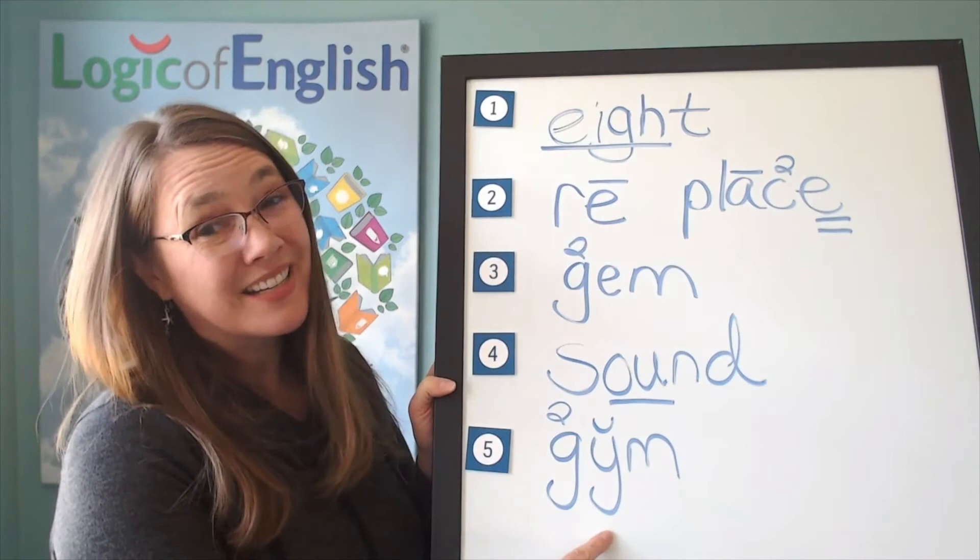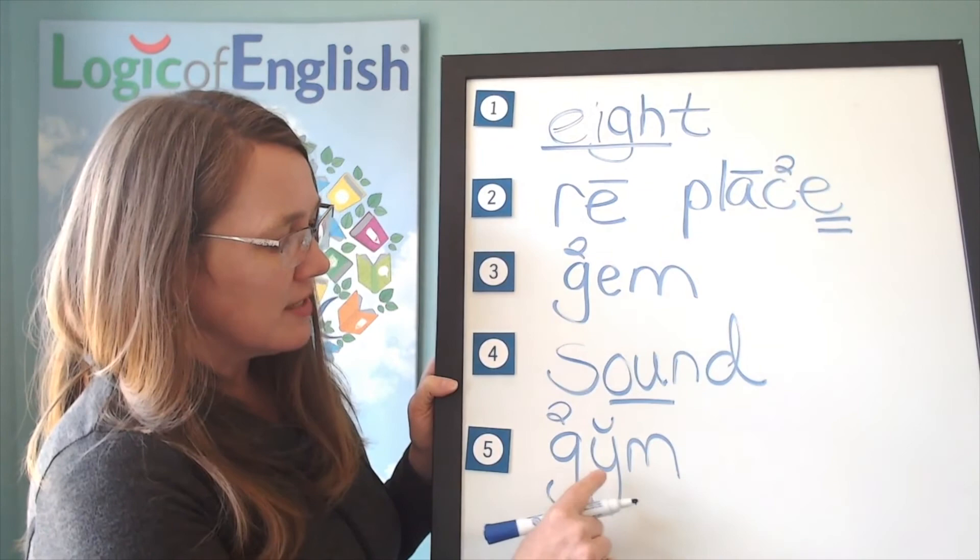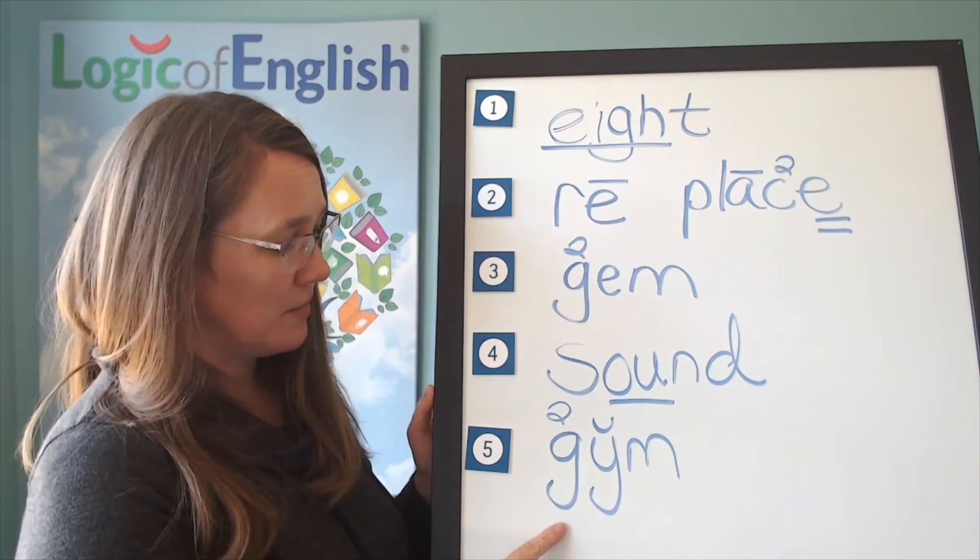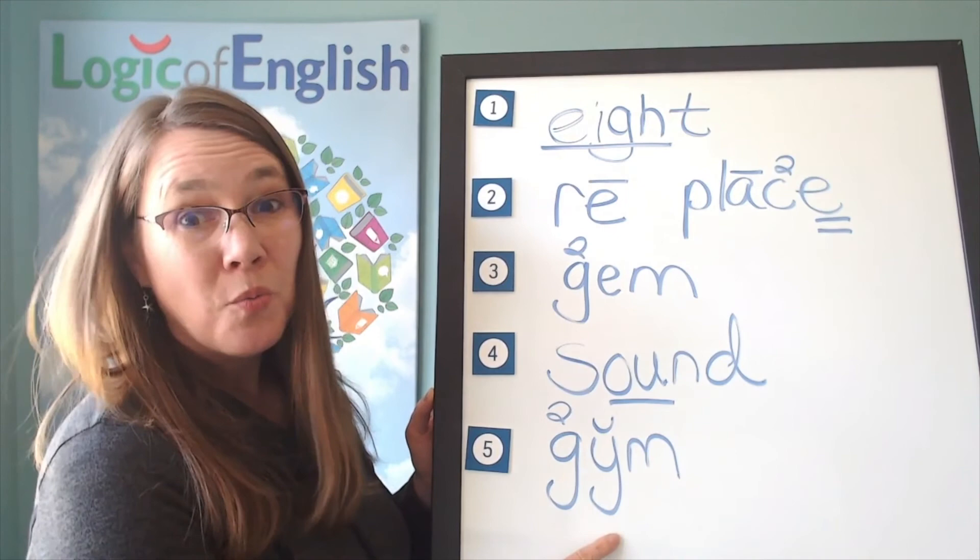Let's sound it out. J-I-M. Gym. Why did the G say J in gym? G may soften to J before an E, I, or Y. Here it's before a Y, so it said J. Gym.